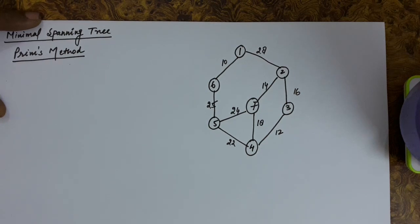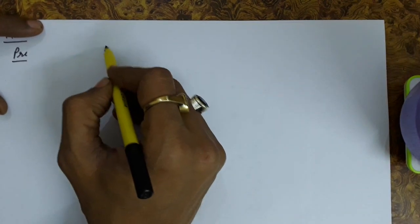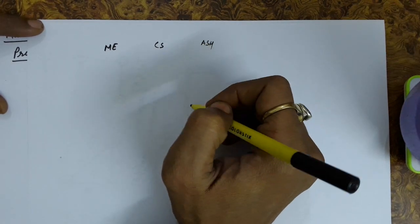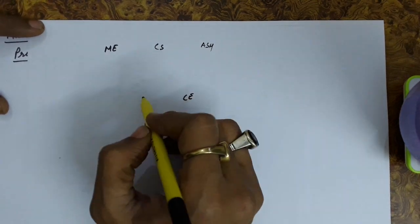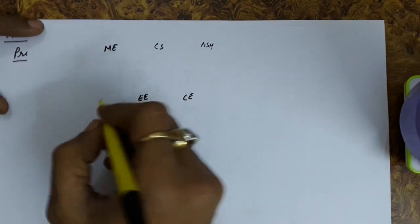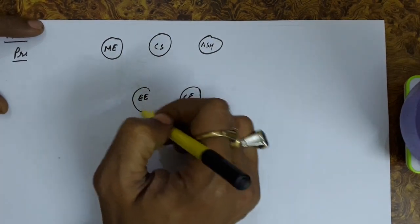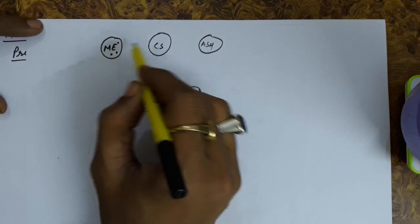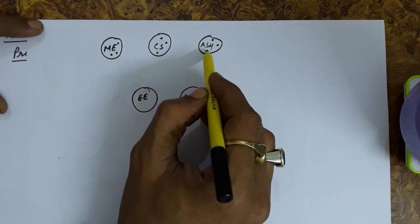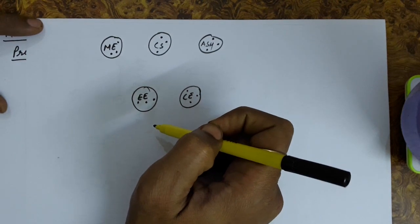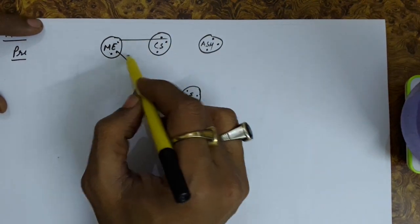Consider a scenario where a college has several buildings: the Mechanical Engineering department, CS department, Applied Science and Humanities department, Civil Engineering, and Electrical Engineering, each in separate buildings with teachers sitting in every building. An intercom connection is required to be established between them such that each faculty member can talk to each other. So we can think of a complete graph here.